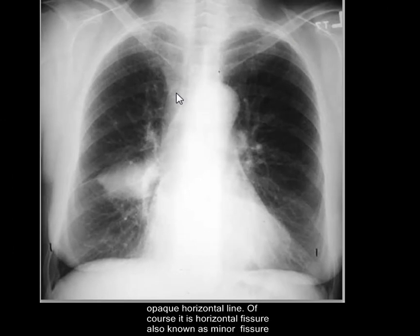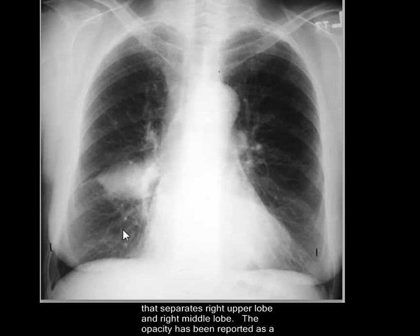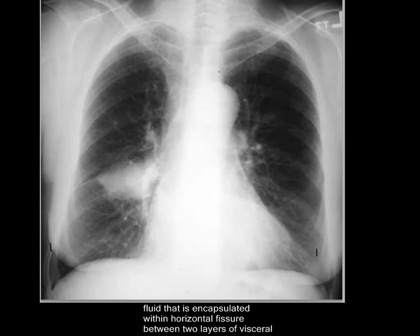Of course, it is the horizontal fissure, also known as the minor fissure, that separates the right upper lobe and right middle lobe. The opacity has been reported as fluid that is encapsulated within the horizontal fissure between two layers of visceral pleura. So the horizontal fissure is made by two layers of visceral pleura.